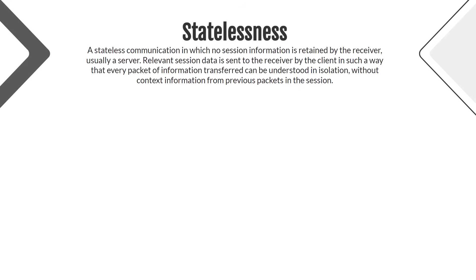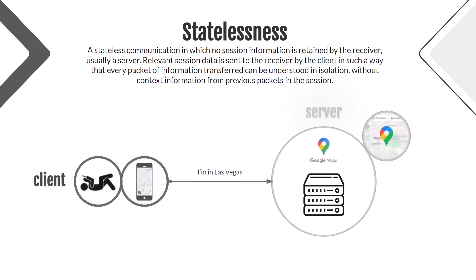Stateless communication is one in which no session information is retained by the receiver, usually a server. Let's get back to our schema. We have a client app — let's say a browser on a phone — and we have the Google server, which stores the Las Vegas map.